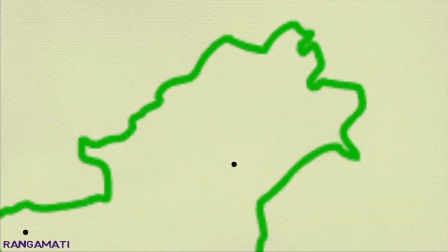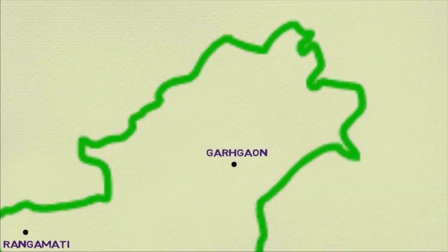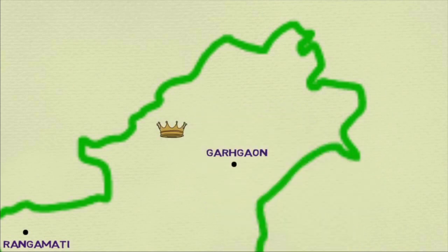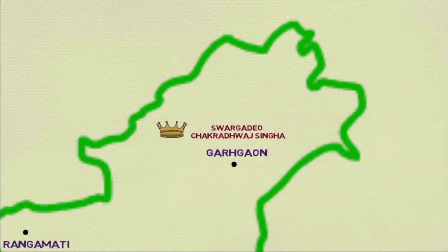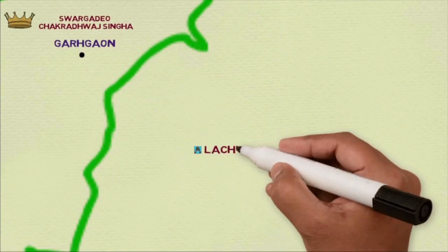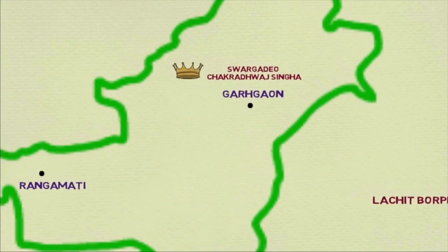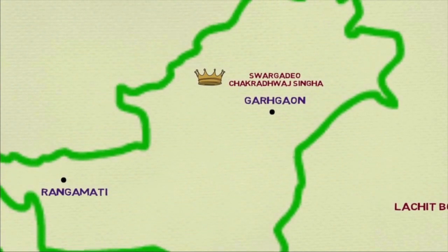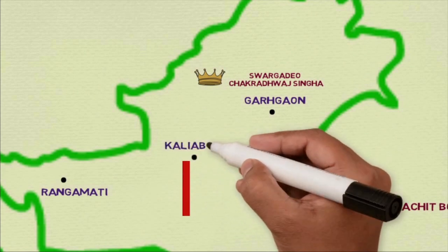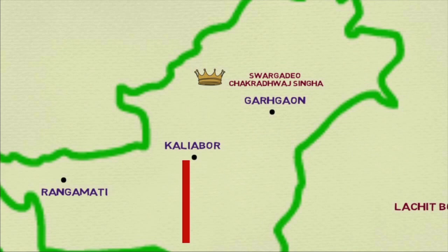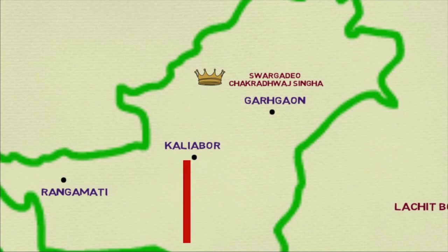Now let us look at the Assamese camp. The home monarch at the time when Ram Singh reached Rangamati was Saolung Supangmung, also known as Swargadeo Charadhwaj Singha, with his capital at Galgaon. The king had appointed Lachit Borphukan as the commander of the force that was to defend against the Mughal invasion. A lot of people think that the rank of Borphukan was that of commander-in-chief of the Ahom forces, but actually that is not the case.